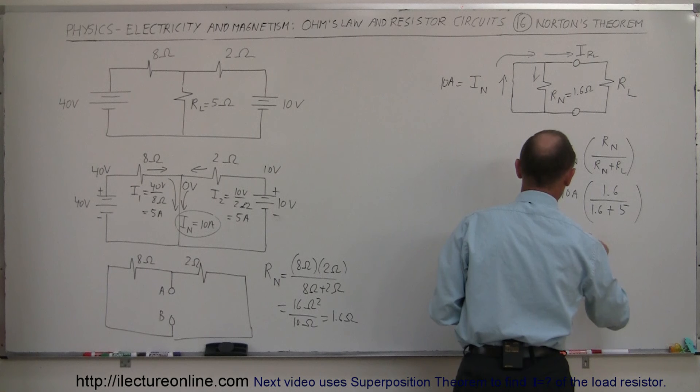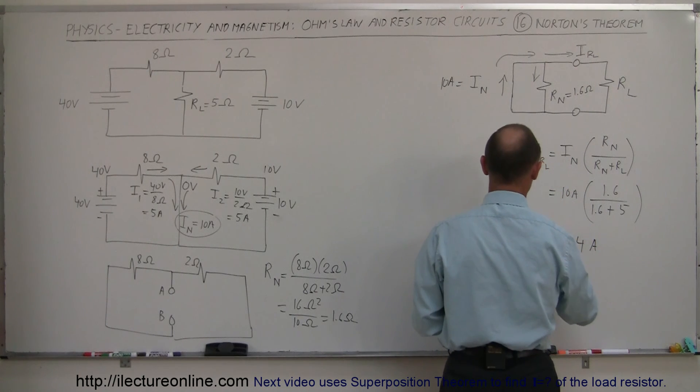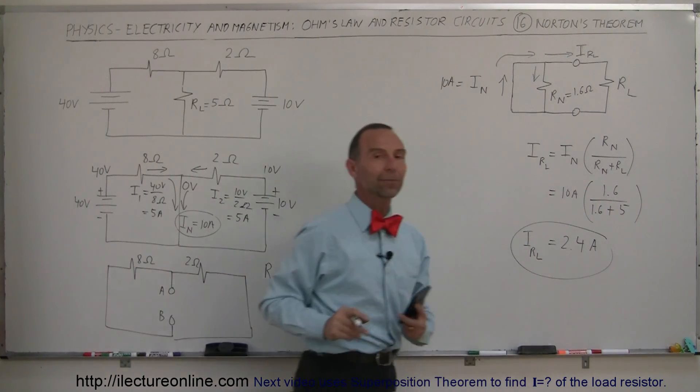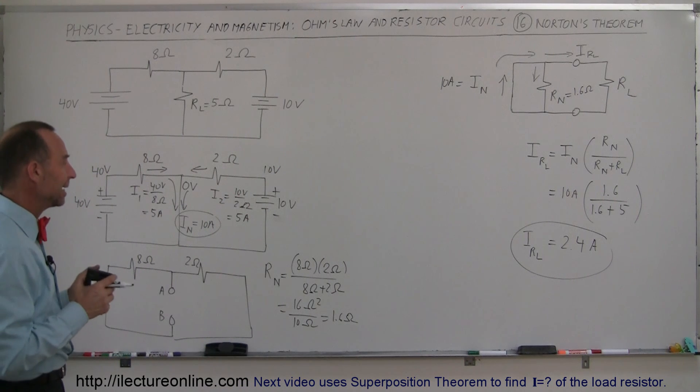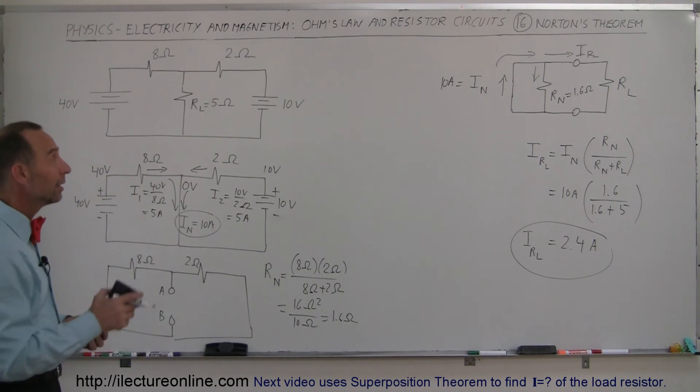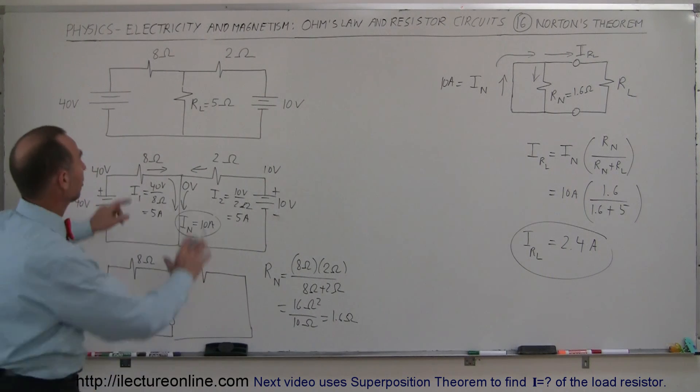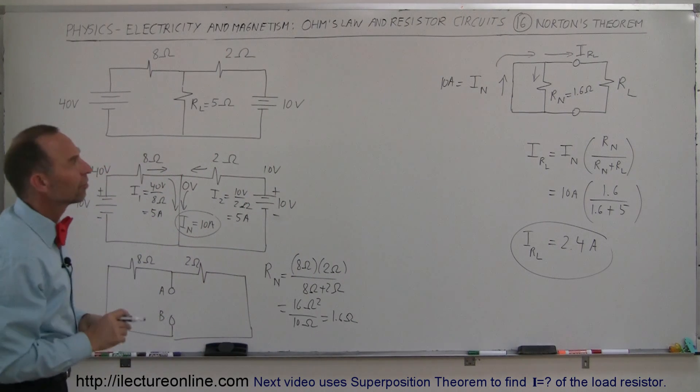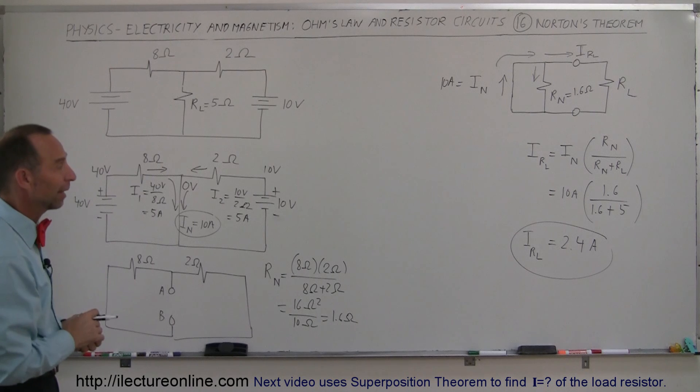Of course, we should expect to get the very same result. And sure enough, we did get the very same result. The current through the load resistor is 2.4 amps using Norton's theorem as well. Those are very handy theorems to calculate the current through the load resistor by changing the circuit around the load resistor to an equivalent simple either Norton's theorem or Thevenin's theorem circuit. In this case, we use the Norton's theorem circuit.